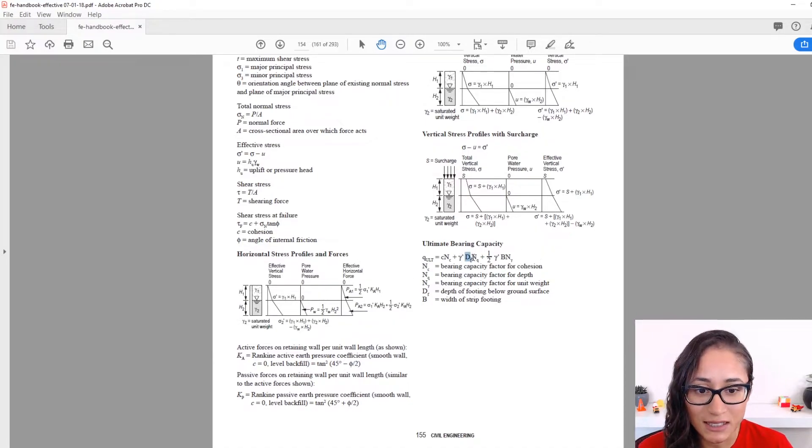Also keep in mind guys that this D here is the depth of your footing and B is the width of your footing. Now let's apply the equation and solve for the ultimate bearing capacity.